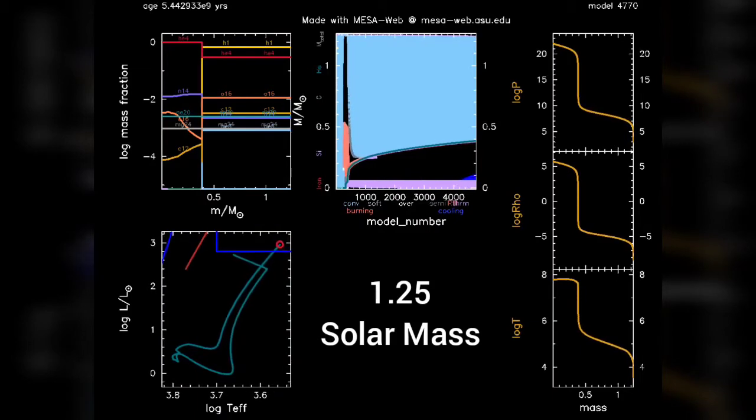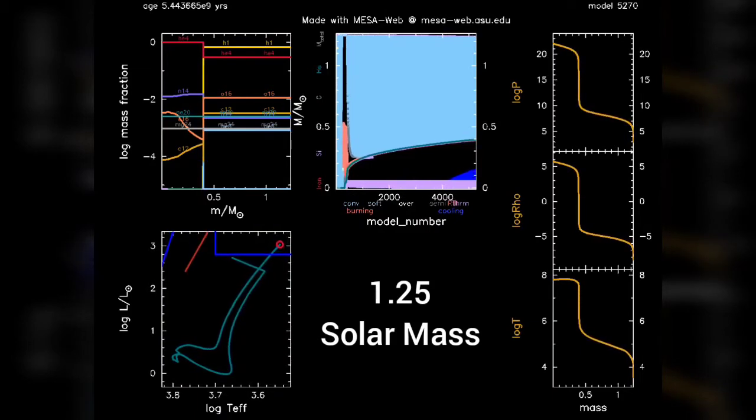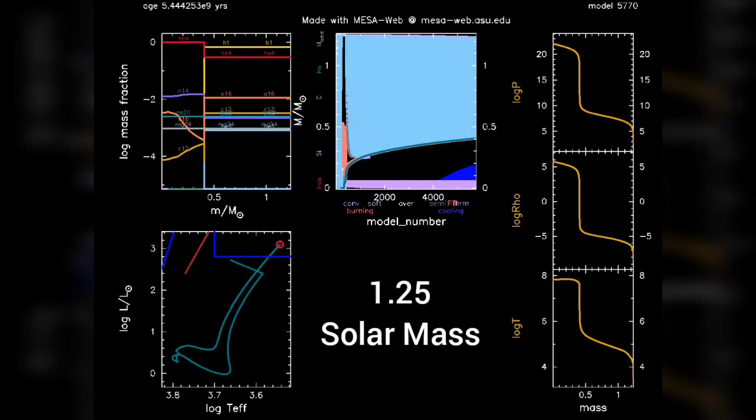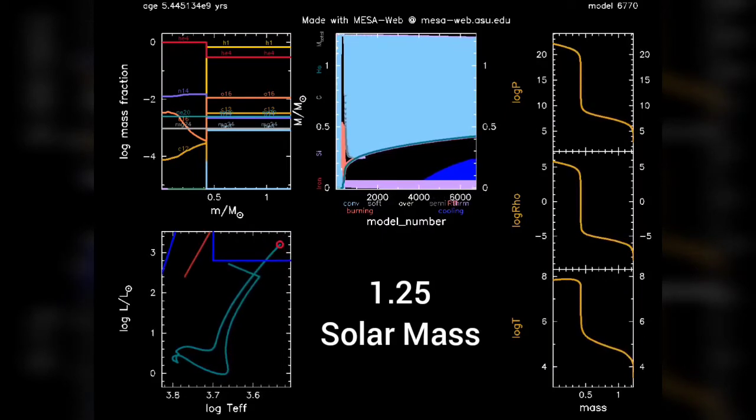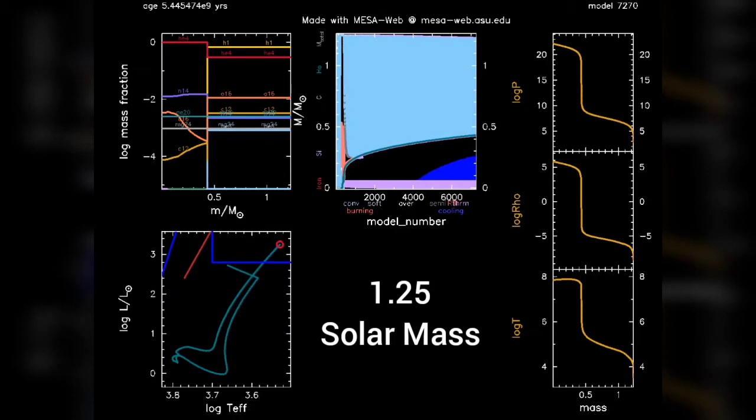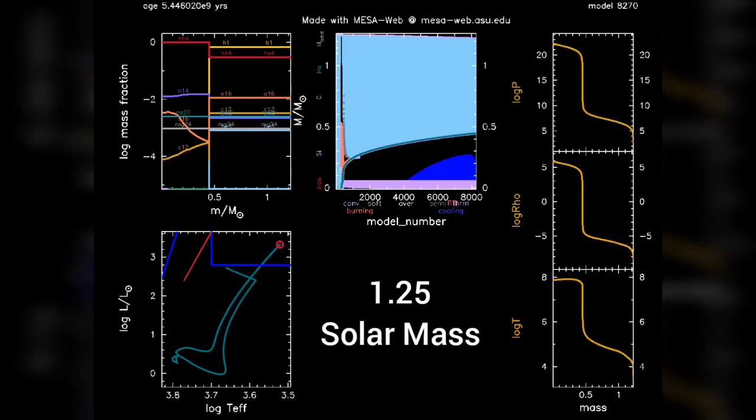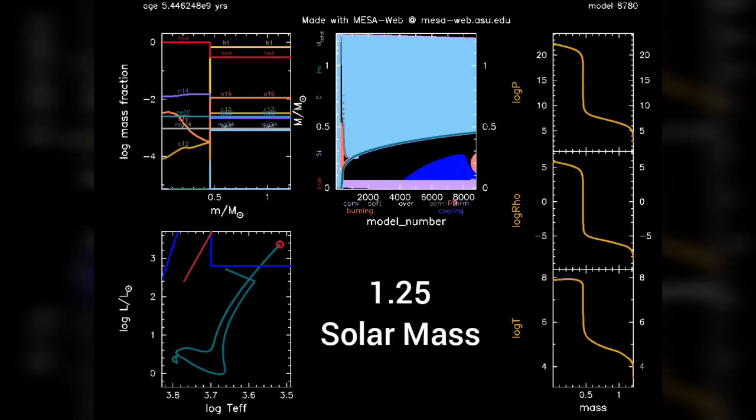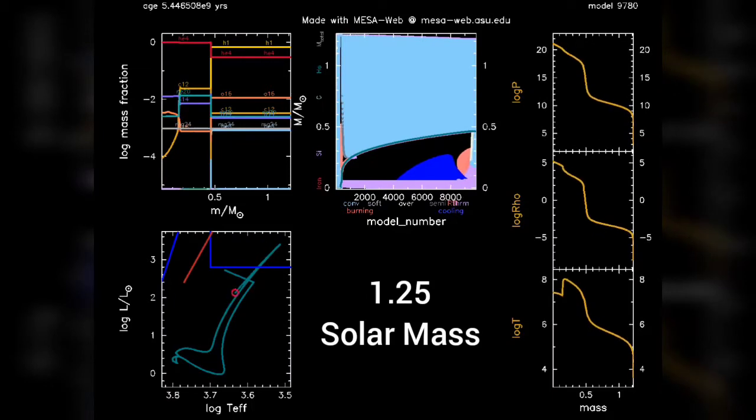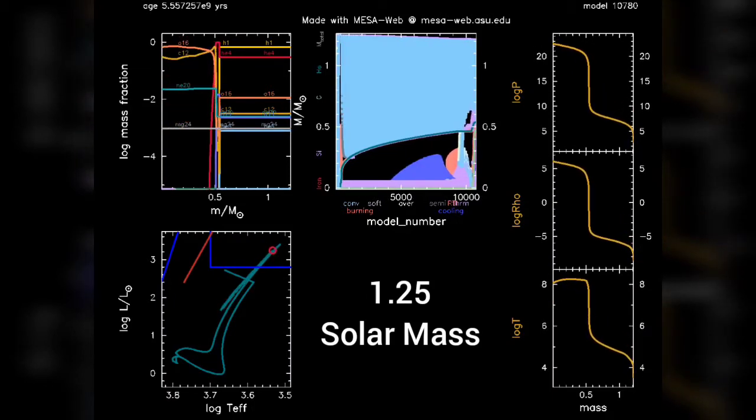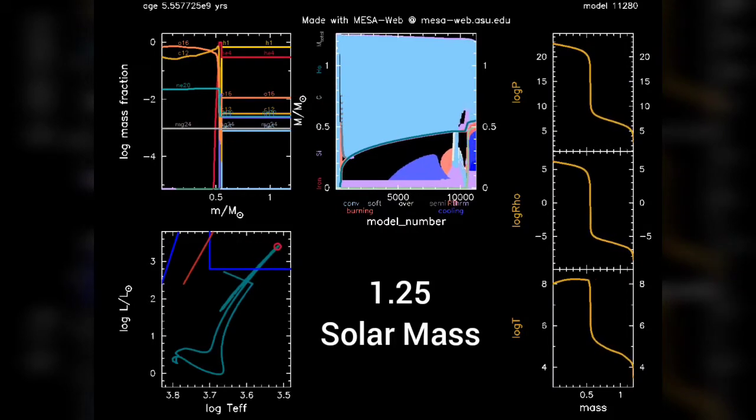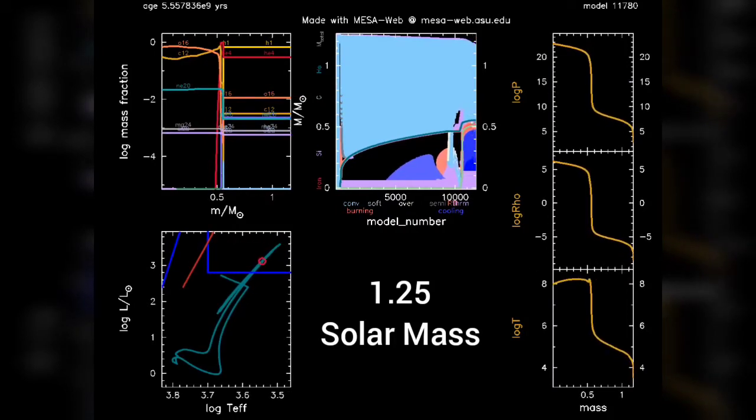The next second graph is the Kippenhahn diagram, which displays the interior of the star as it evolves from pre-main sequence to the later stages of evolution. The x-axis is the model number, which is basically the continuously updating time axis. And the y-axis is the Lagrangian mass coordinate. So different regions are indicated by different colors. For example, you can see the areas which have convective energy transport, the areas which have nuclear burning going on, the areas which are cooling, etc.